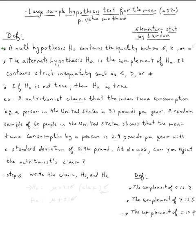Let's read the definition. A null hypothesis H₀ contains the equality such as less or equal, bigger equal, or equal. The alternate hypothesis Hₐ is the complement of H₀. It contains strict inequalities such as strictly less, strictly bigger, or not equal.